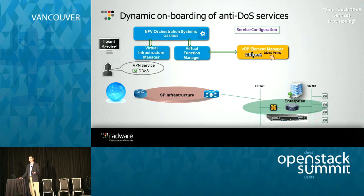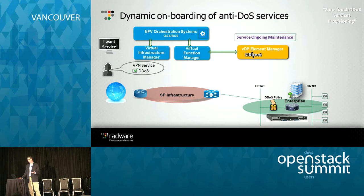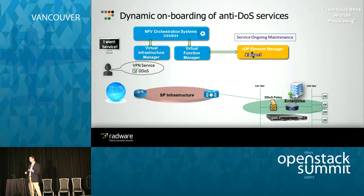The DDoS policy is set — the rules based on when it sees an anomaly and what should be done — and those rules are then pushed down into that virtual element running OpenStack. Once that's done, it's essentially a provision-once, run-forever type of service. There's no ongoing maintenance once that initial policy is set, unless there's some real-time update to rules or policy that needs to be done.